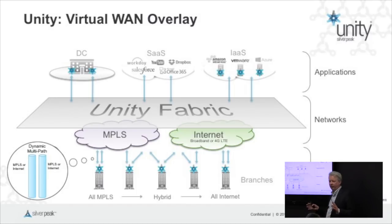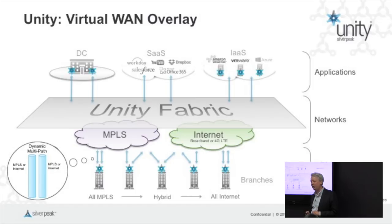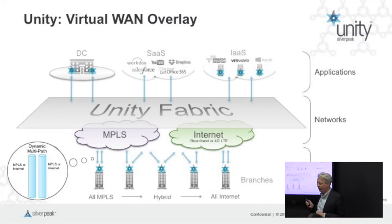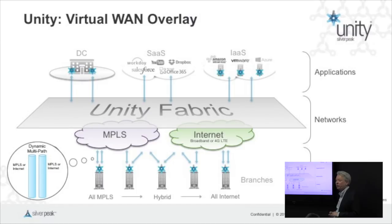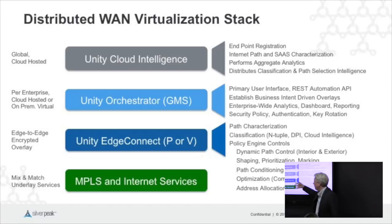I'm about to jump off from the marketing slides and get technical. We have a distributed WAN virtualization stack with three layers — there are four layers in the picture, but the bottom layer is not Silver Peak; that's your underlay, your MPLS and internet services. On top of that we have our edge systems, physical or virtual, present in the branch, in the cloud, and in the data center.